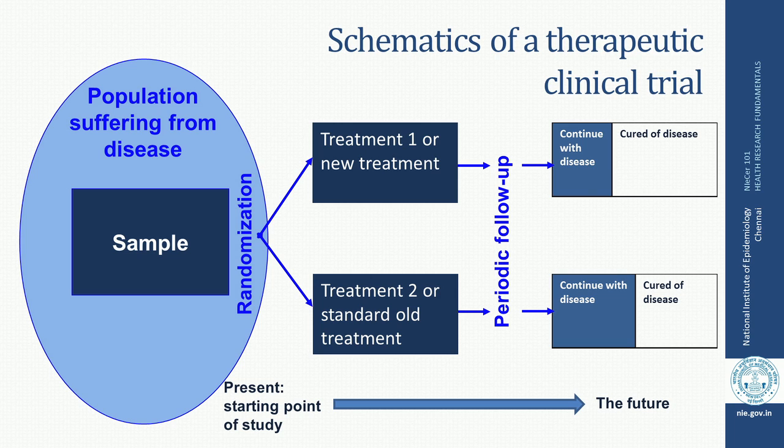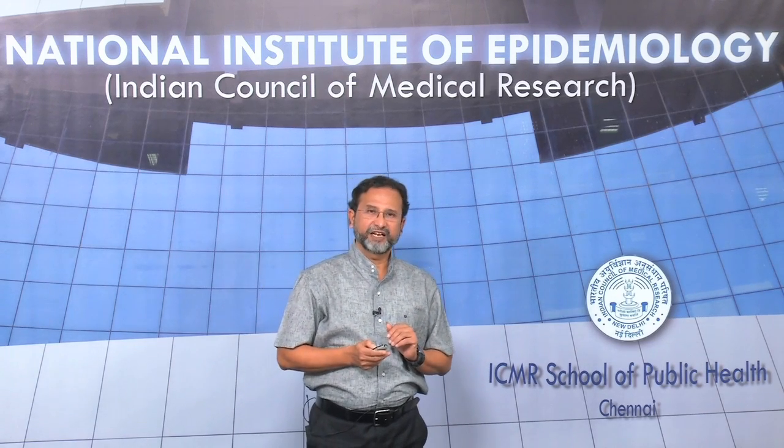Follow-up may be once every three months for one year, or once every six months for two years, or whatever is decided. We then assess them to find out, in a therapeutic trial, how many have actually been cured of the disease and how many continue to have the disease. The expectation is that the newer treatment will have more benefit, so the number of people cured would be more compared to the other arm, and this can be statistically analyzed.